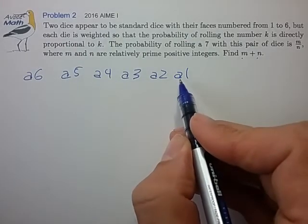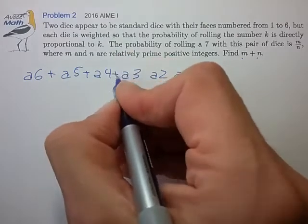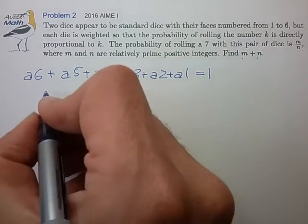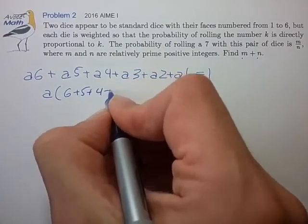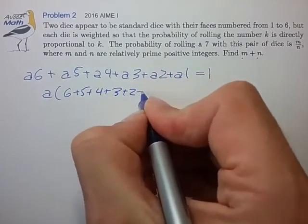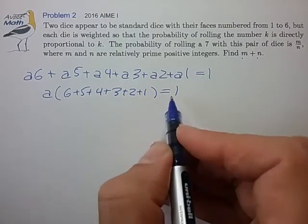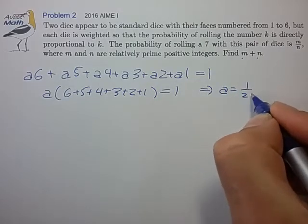It'd be nice to know what A is, and we can do that pretty quickly because we know that the sum of these probabilities has to add up to 1. And we find that factoring out the A is equal to 1, and this series is 7 times 3, 21. So we find that A is equal to 1 over 21.